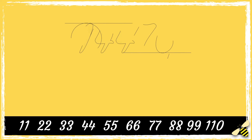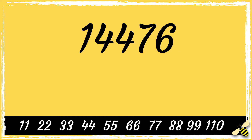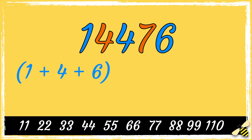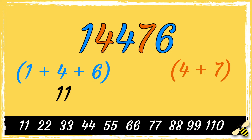Let's look at another example: 14476. We have the odd digits and the even digits. Let's add the odd digits: 1 add 4 add 6 is 11. Then the even digits: 4 add 7, which is also 11. The difference between 11 and 11 is 0, so this number is divisible by 11.